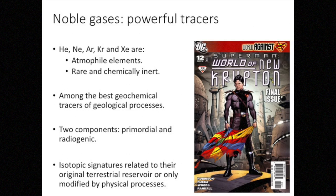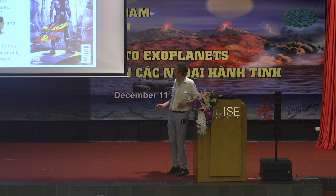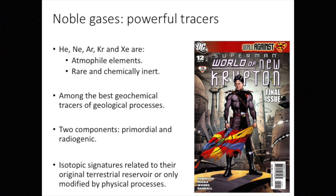Why noble gases? Because they are atmophile elements — rare and chemically inert — and for this reason are among the best geochemical tracers of geological processes. They generally have two components: primordial and radiogenic. Of course, everybody wants to find primordial components in these rocks rather than radiogenic, but the rocks are old and you have many elements producing radiogenic noble gases like helium and argon, so you cannot skip the radiogenic component. I will show that the radiogenic component in this presentation can be important and give us some important clues. The isotopic signature of noble gases is generally related to the original terrestrial reservoir and modified only by physical, not chemical processes — making them very powerful tracers.